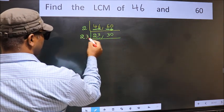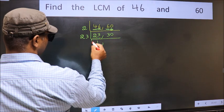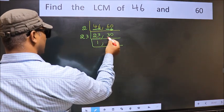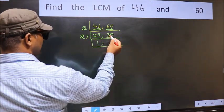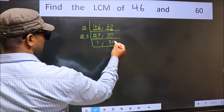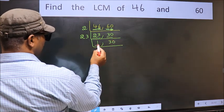23 is a prime number. So 23 times 1 is 23. The other number 30, not divisible by 23, so we write it down as it is. We got 1 here.